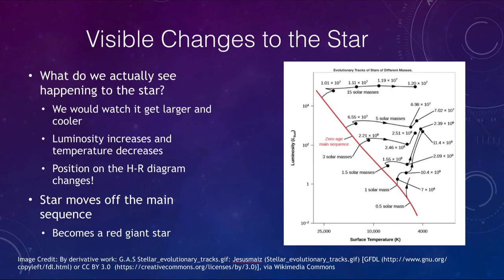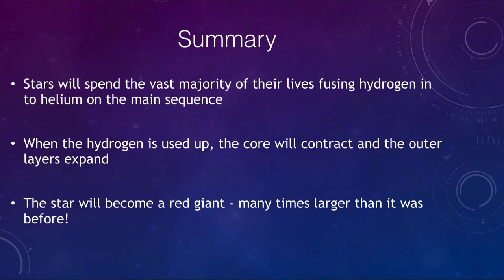So let's conclude with our summary. What we find is that stars do spend the vast majority of their lives fusing hydrogen into helium on the main sequence. Eventually the hydrogen will be used up, the core will begin to contract, it will get smaller and smaller, compressing together and the outer layers will expand, making the star a red giant, many times larger than it was before. And as I said, eventually engulfing the entire inner solar system, including the Earth.